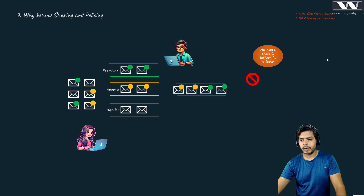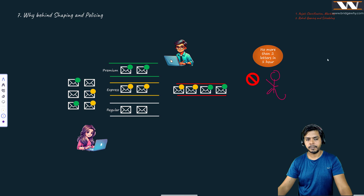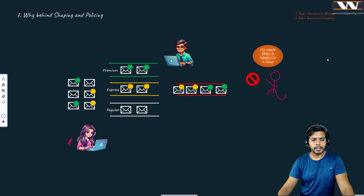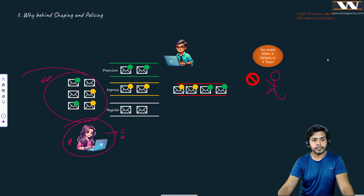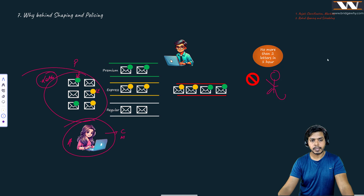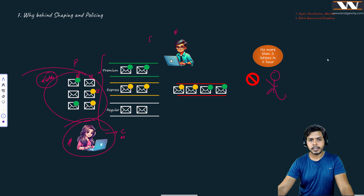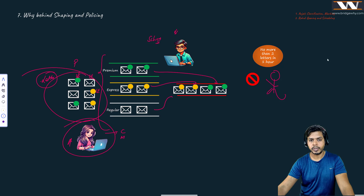Now let's look at the postal office analogy. We have Anjali, who is a champion at classifying and marking packets. Whatever letters Anjali is getting, she is marking them — the green ones are premium service, the yellow ones are express service, and the white ones are regular service. She has made three lanes and we have Mr. Rahul, who is our scheduler. Rahul sees the premium messages go out first, then express, then regular — he is doing the scheduling.